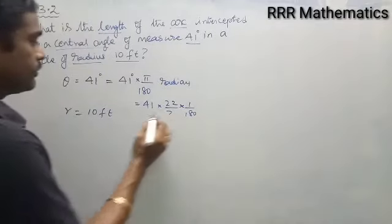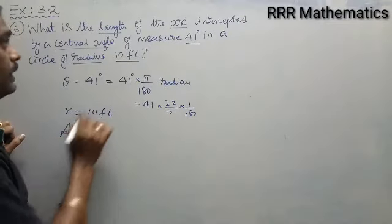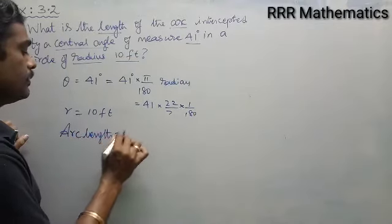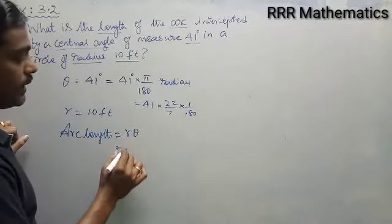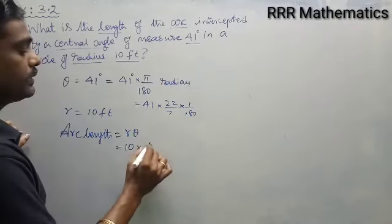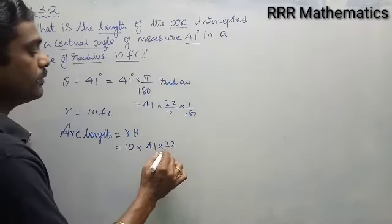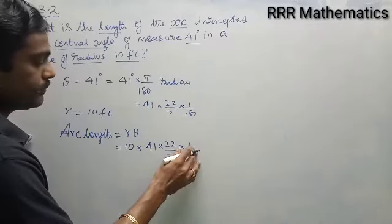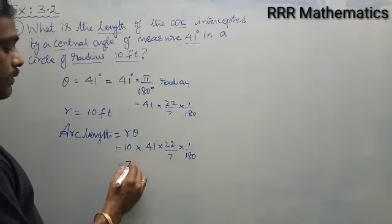This is what your theta is. Now we need arc length. Arc length formula will be r into theta, where r is 10 and your theta is 41 into 22 by 7 into 1 by 180. When you simplify, you will get 7.16 feet approximately.